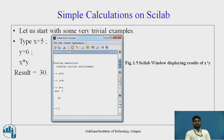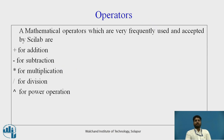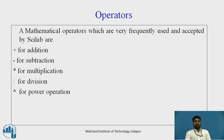It is very simple — just assign the value of x, assign the value of y, and type the operation x asterisk y to get the answer. We will now see the different operators that are frequently used in Scilab: plus sign for addition, minus sign for subtraction, asterisk sign for multiplication, slash sign for division, and the caret sign for power operations.